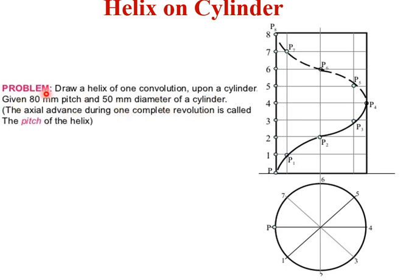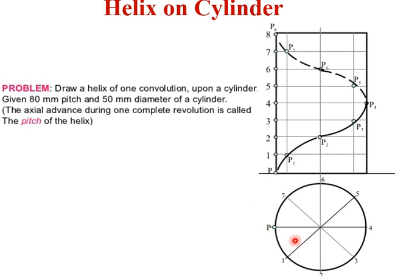The diameter of the cylinder is 50 millimeter and 80 millimeter is the pitch, equal to the height of the cylinder. The first step is to construct the orthographic view of the cylinder. Start from the top view — draw a circle of 50 millimeter diameter. Dimension it with two arrows and a leader line, writing 50. After drawing this circle as the plan, divide it into eight equal parts: one, two, three, four, five, six, seven, eight. The point moves anti-clockwise along the surface of the cylinder — show this direction with arrows.